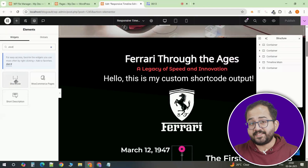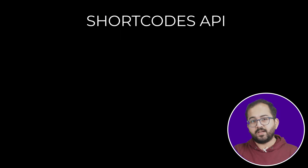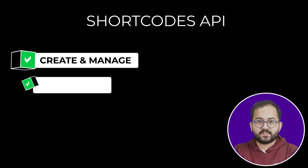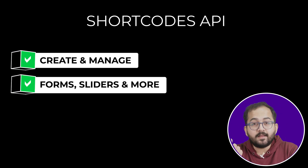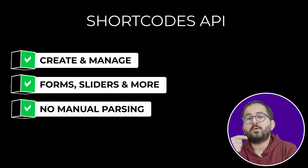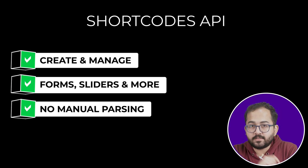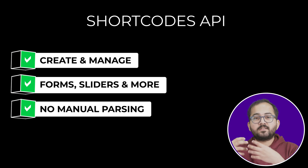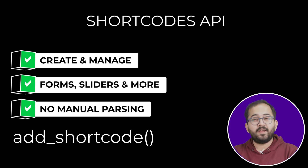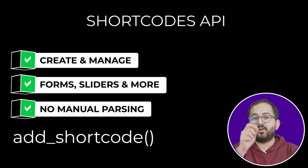If you're looking to take things even further, let's talk about the WordPress Shortcode API. This API lets you define and manage shortcodes, allowing you to create more complex features like custom forms, carousels, or sliders. With this API, you don't have to worry about manually parsing the shortcode content — it automatically handles the tricky stuff. When you register a shortcode with this function, the WordPress Shortcode API ensures it's processed properly and outputs the correct content on your site.